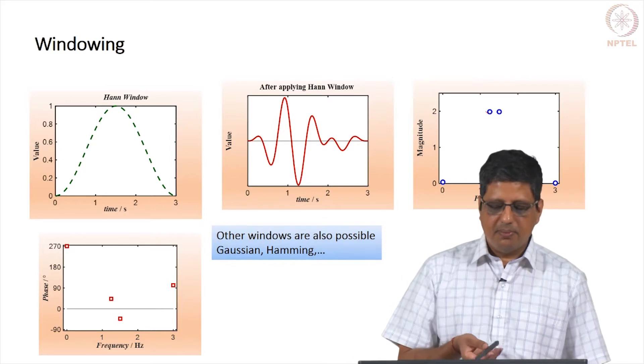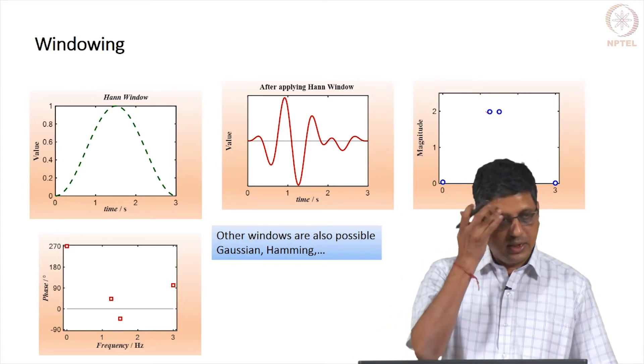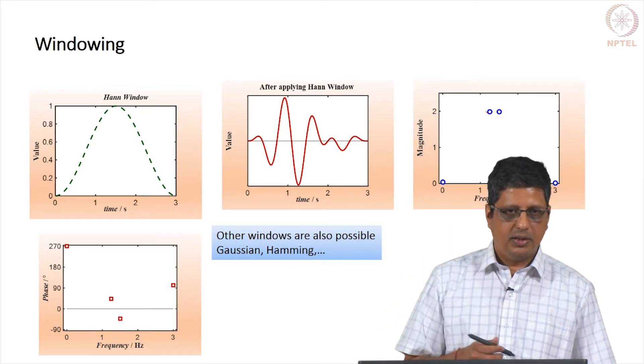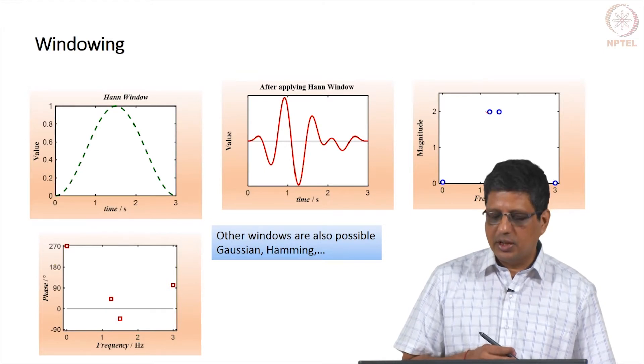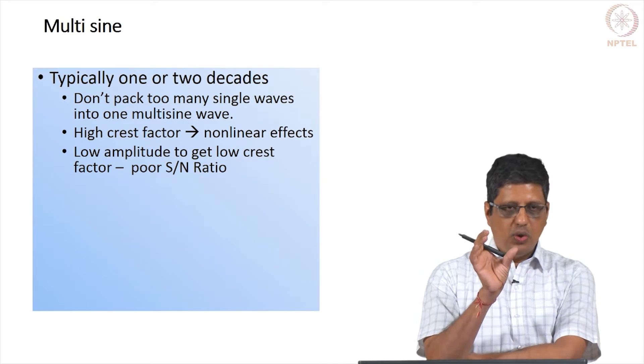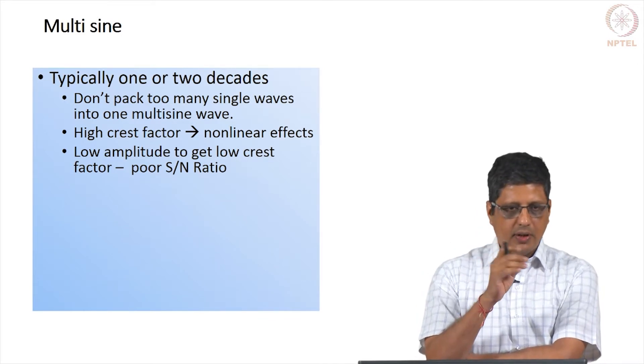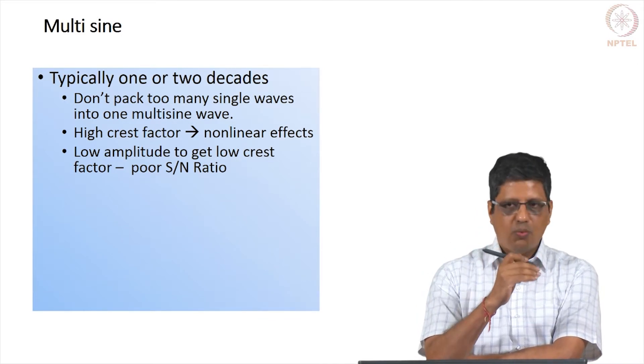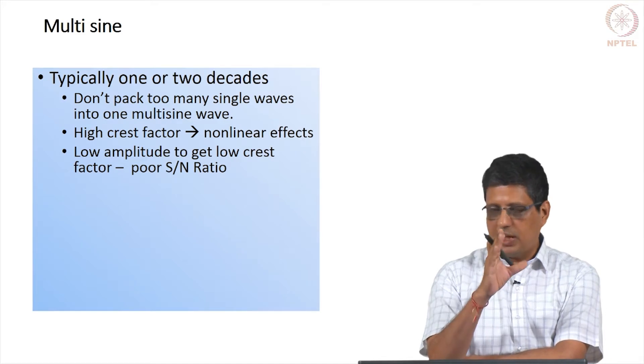So other windowing functions are possible. I am giving you two examples, Gaussian and Hamming window. There are few other types of windowing functions that are used, that can be used. Typically one decade or two decades is what you want to use. Meaning, I want to combine frequencies from 1 to 10 or 1 to 100 and create a multisine.